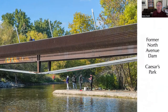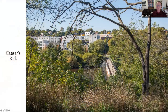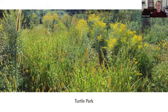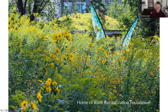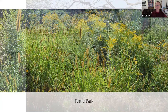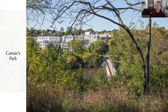Getting down to the south end of the greenway, we reach the old dam, now a pedestrian walkway. On the east side is Caesar's Park, and on the west side is a new park owned by the River Revitalization Foundation called Turtle Park, where their headquarters are located — you can just see their green roof in the background. It's a spectacular park when the flowers are blooming, which is most of the summer and into the fall. It's a relatively small park at four acres, squeezed between the river and condominiums, but it's really beautiful.